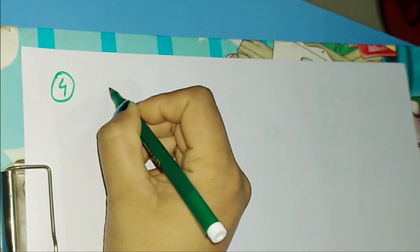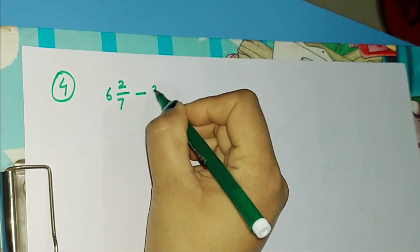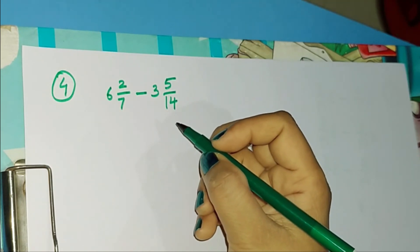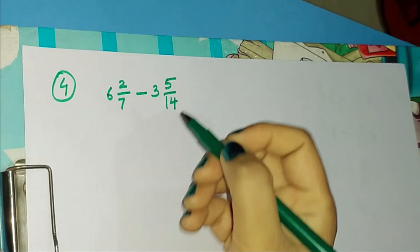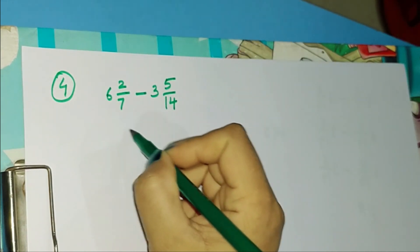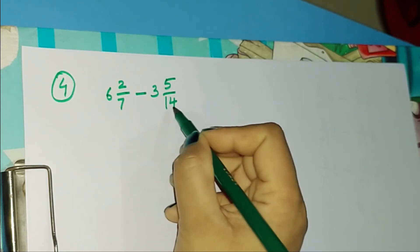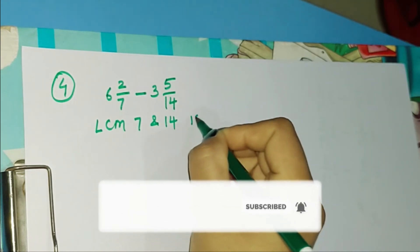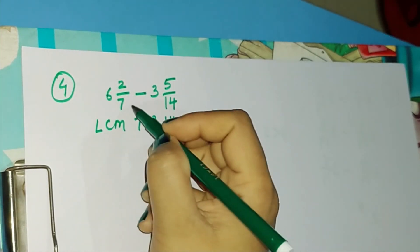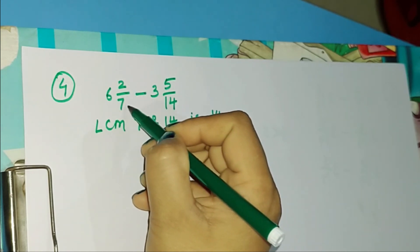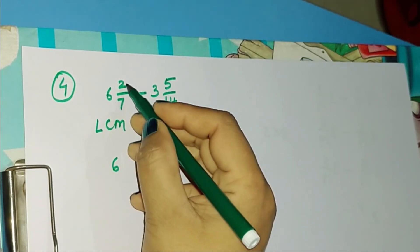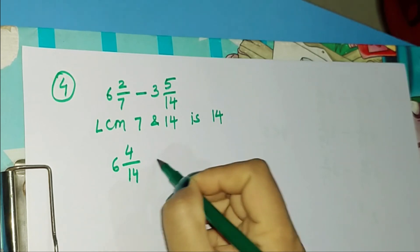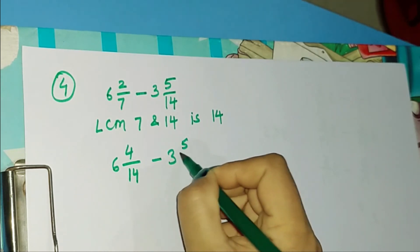Let's take our fourth example: 6 2/7 minus 3 5/14. In this question we will quickly apply what we did in questions 1, 2, and 3. The denominators in both numbers are different, so we will make the denominator the same. The LCM of 7 and 14 is 14. To make the denominator 14 for the first fraction, we multiply both numerator and denominator by 2. So 2 times 2 is 4, and 7 times 2 is 14. This gives us 6 4/14 minus 3 5/14.